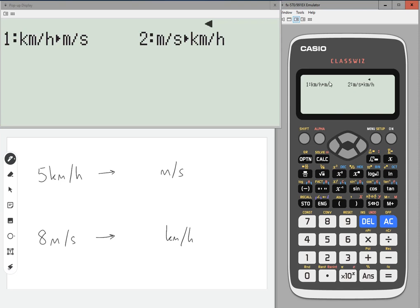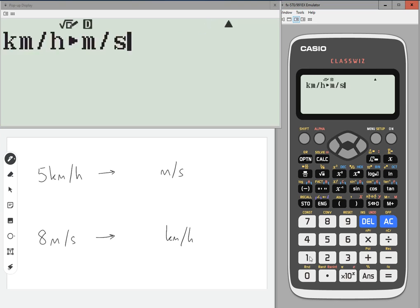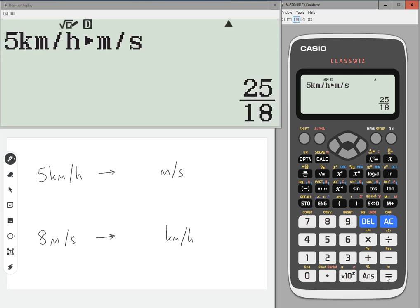So if we want to go to kilometers per hour to meters per second, then option number 1. And what I'm going to do is just go left and then type in 5 and then press equals, and it will convert it into meters per second for you.